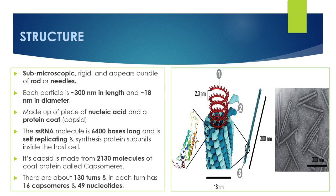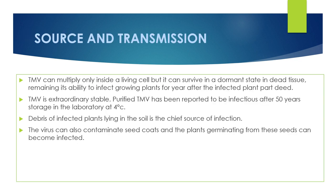Moving on to source and transmission — TMV can multiply only inside a living cell, but it can survive in a dormant state in dead tissue, retaining its ability to infect growing plants for years after the infected plant part has died. TMV is extraordinarily stable; purified TMV has been reported to be infectious after 50 years of storage in the laboratory at 4 degrees centigrade.